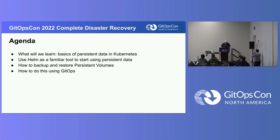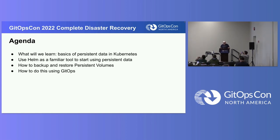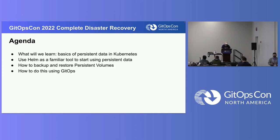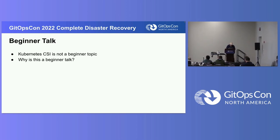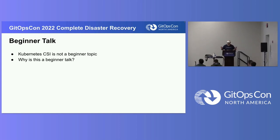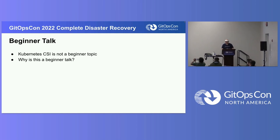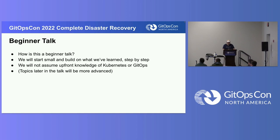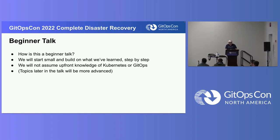Here's our agenda. We're going to learn about Kubernetes CSI and we're going to use a lovely little tool called Helm, which you may have heard of, that makes working with CSI volumes a little bit more approachable. CSI is by and large not a beginner topic, so why is this a beginner talk? This actually is in the schedule as a beginner talk. We're going to start small and build upon what we know or what we've learned.